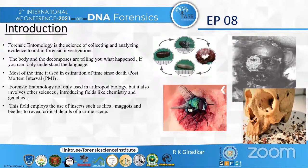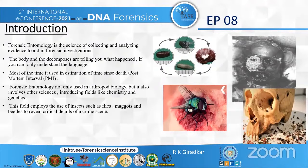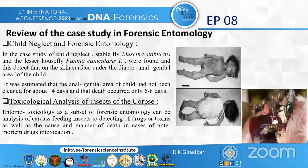Most of the time it is used in estimation of time since death, or postmortem interval. Forensic entomology is not only used in arthropod biology, but also involves other sciences, including fields like chemistry and genetics, exploiting their inherent synergy through the use of DNA in forensic entomology. This field employs the use of insects such as flies, maggots, and beetles to reveal critical details of a crime scene.